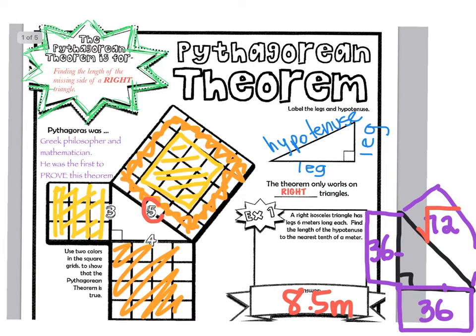The problem is, who wants to do that? Draw squares, draw squares, get the area of all the squares, and take the square root. So let's look at what happens when we use the theorem.